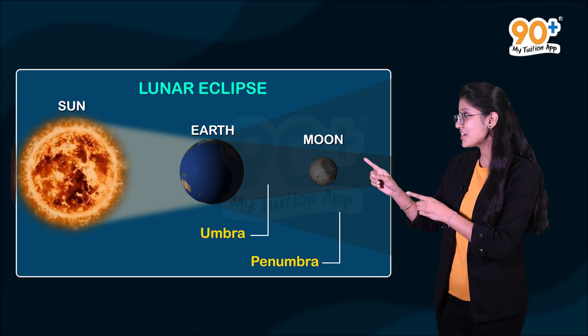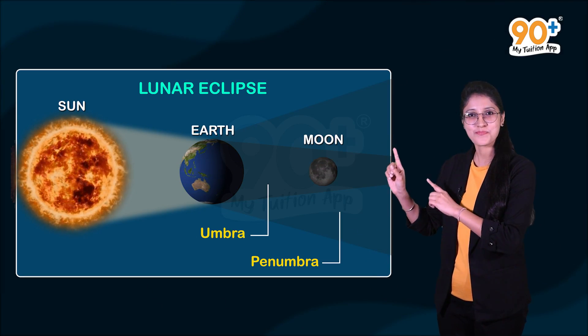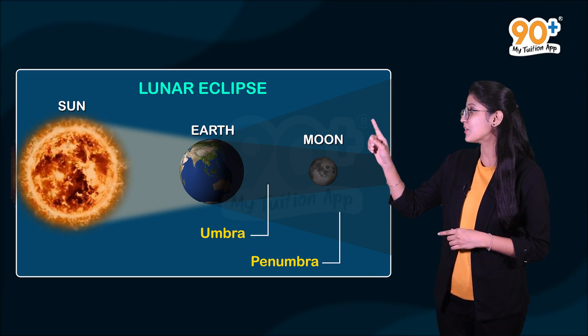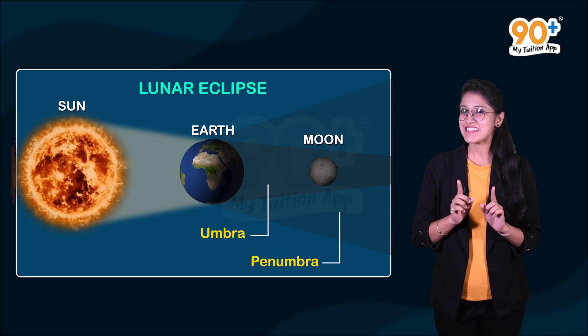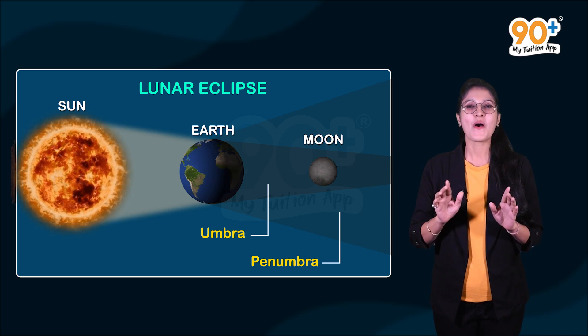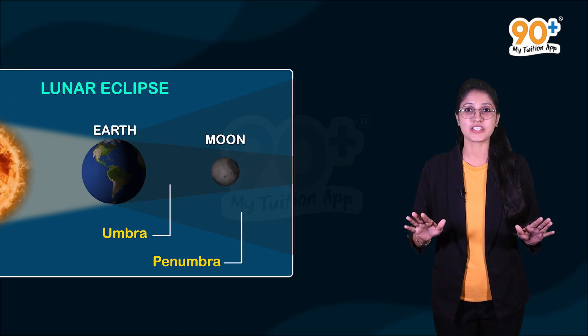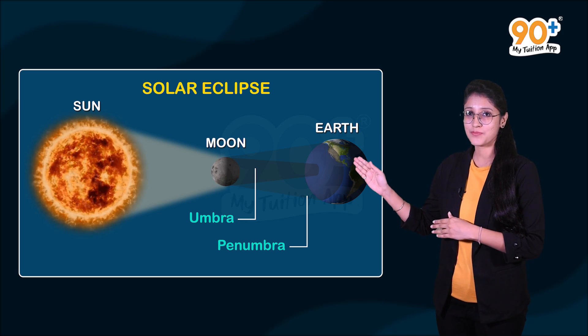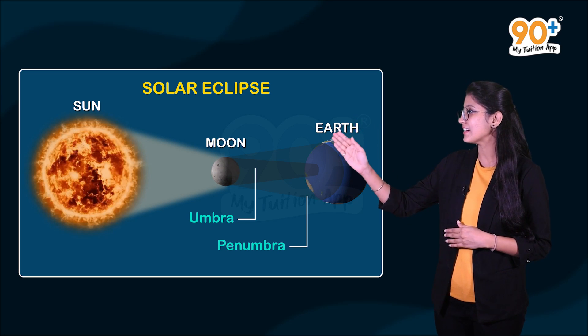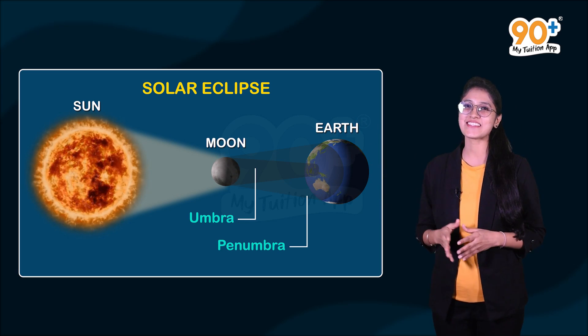On the full moon day, the earth is in between the moon and the sun. Similarly, on new moon day, the moon is in between the earth and the sun.